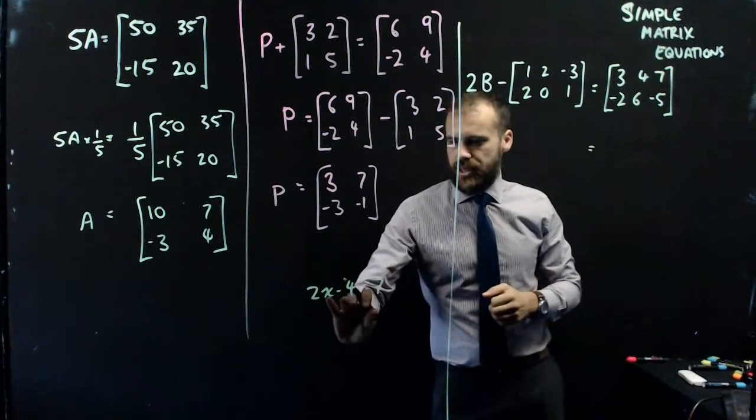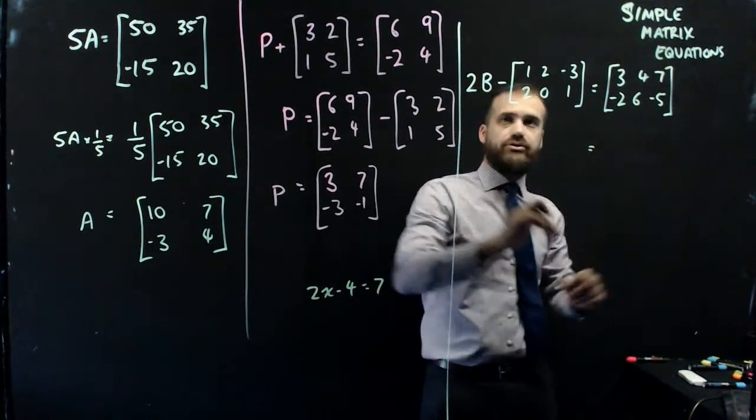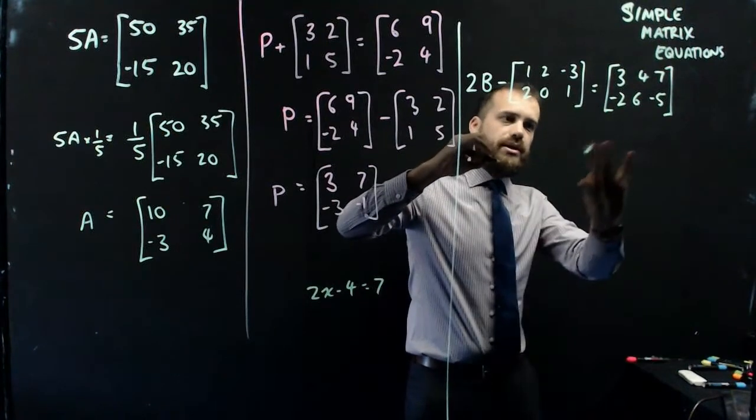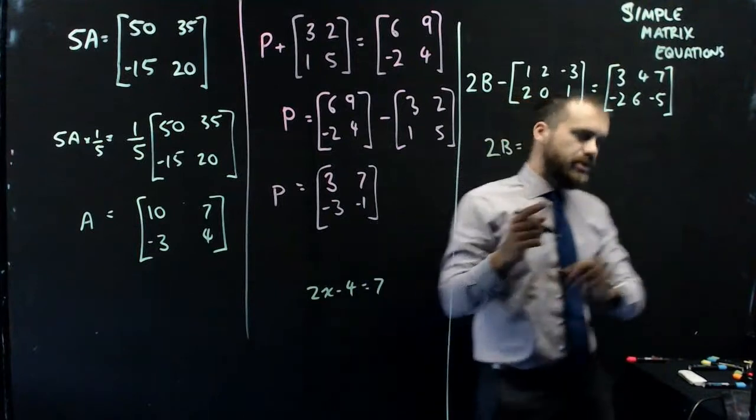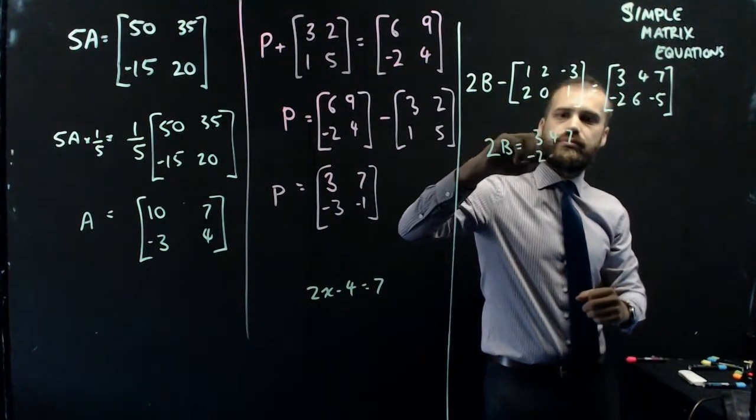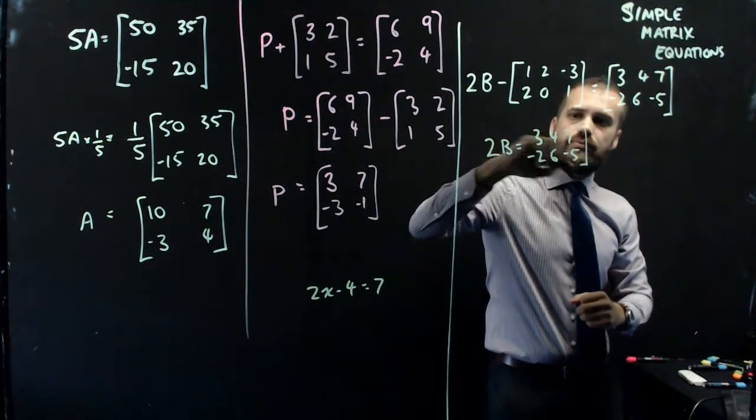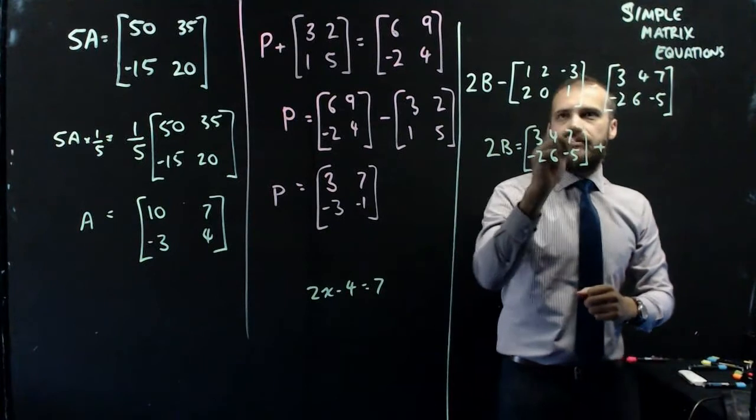So what's our first step here? We'd add 4 to both sides. So let's do that. We're going to add that matrix to both sides. So we'll end up with 2B equals this matrix plus that matrix.